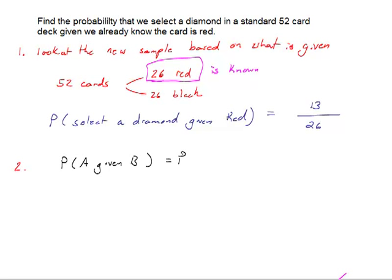We write this in shorthand with that vertical line. A given that B has occurred is the probability of the intersection of the two events over the probability of the given event B. Now what this ratio represents is the relative size of A inside B if we look at a Venn diagram description of what's going on.